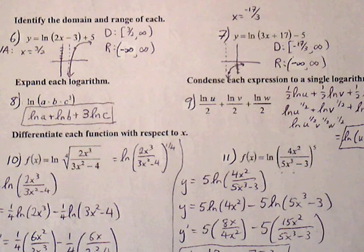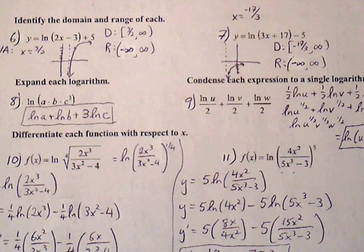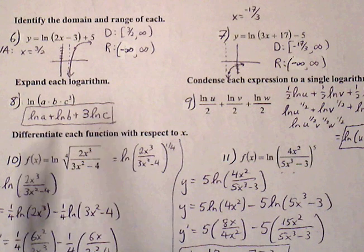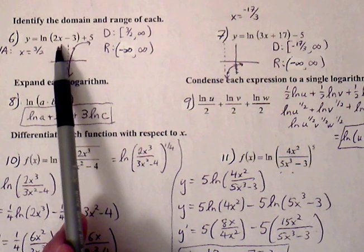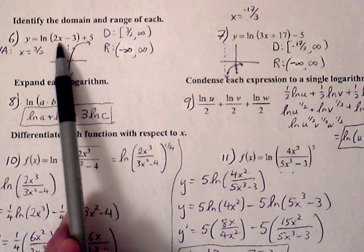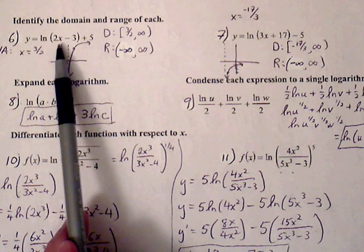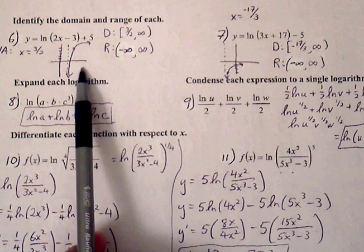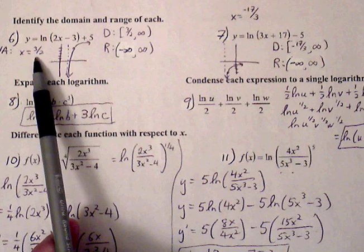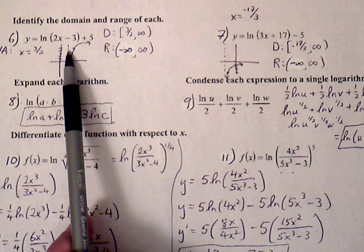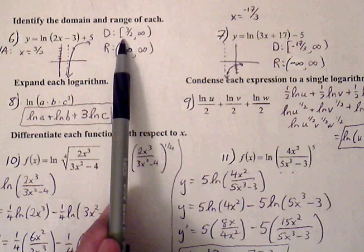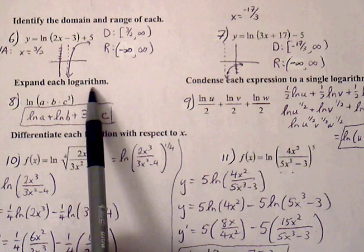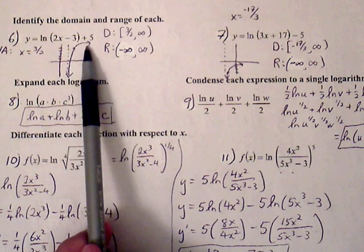Continuing with the back page of the quiz review, sections 5.1 to 5.3. Number six: identify the domain and range. Natural log functions always have a vertical asymptote. Thinking about transformations, the graph shifts to the right by three-halves and up five, so the vertical asymptote is at three-halves. Anything to the right of three-halves is the domain: from three-halves to infinity.